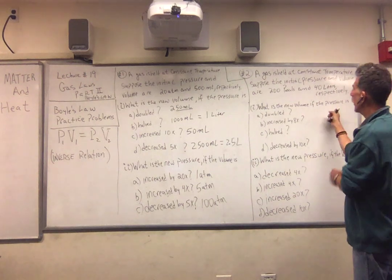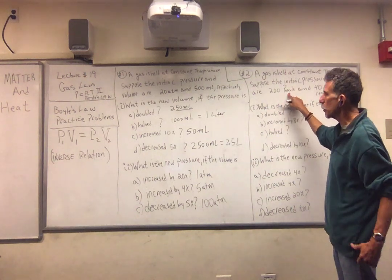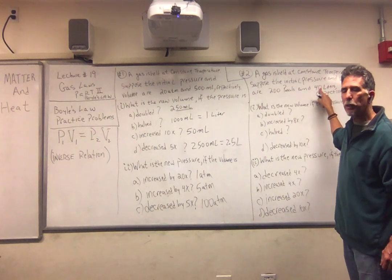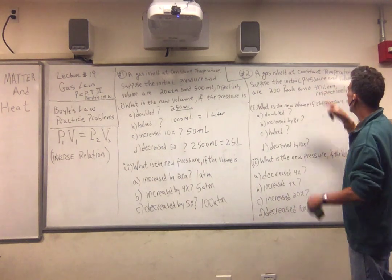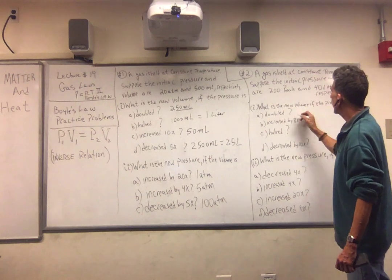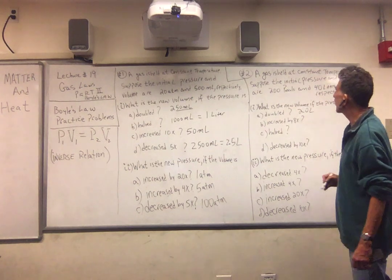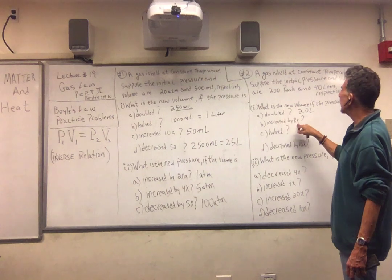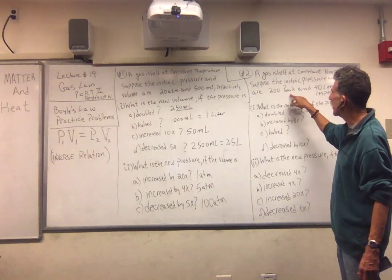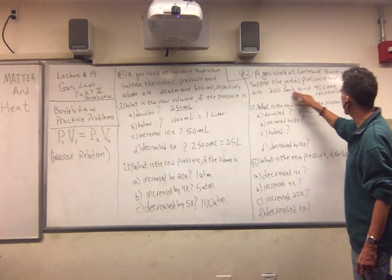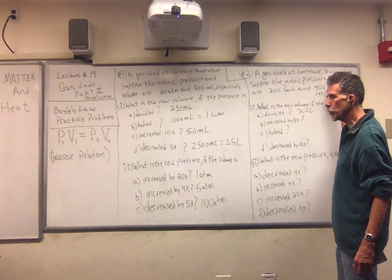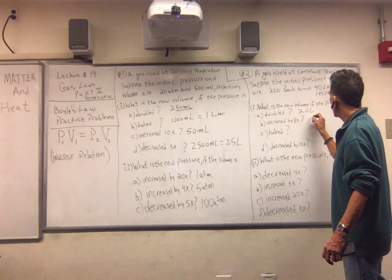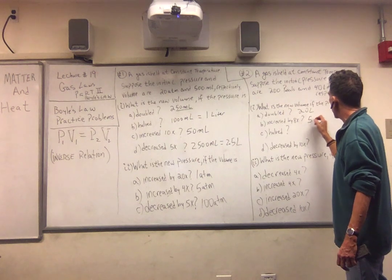What are we doing to the pressure? We're doubling. If we double the pressure, the volume — inverse relation — must halve. What is half of 40? The answer is 20 liters. Second part: what happens if we increase the pressure by 8 times? If we increase the pressure by 8 times, the volume must decrease by 8 times. So we divide 40 by 8, which should be 5 liters.